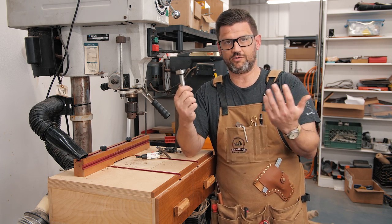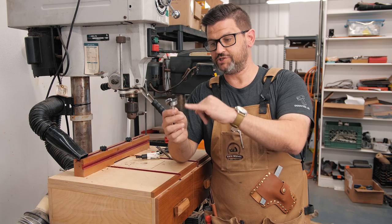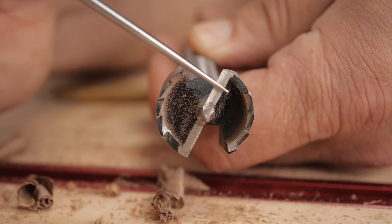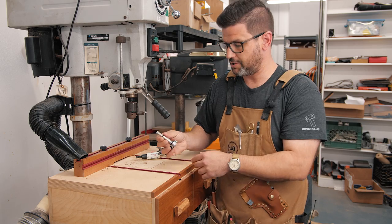When you look at how a Forstner bit works, it has a cutting edge on the side. This is a sawtooth Forstner bit, and then it has two cutters in the middle. Let's look at this in slow motion, and you can see exactly how this works.